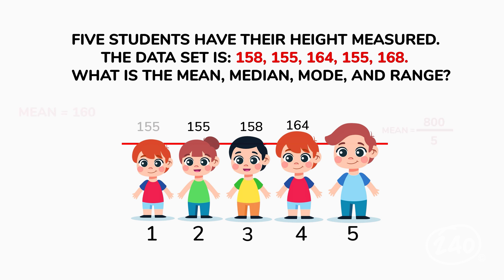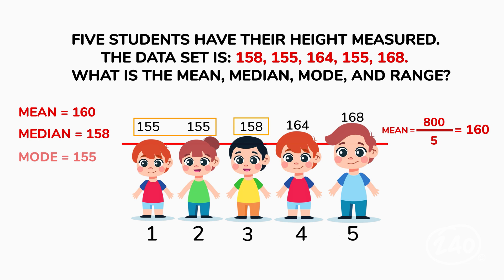The mean is the average. So all these numbers added up divided by the number of data points, or five, gives us 160. The median is the middle value, so 158. The mode is the number that appears most often. Since the value 155 appears twice, that's our mode. Finally, the range is the largest value minus the smallest value. So 168 minus 155? Our range is 13.